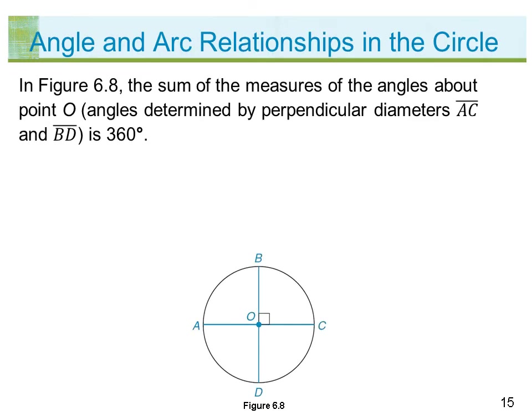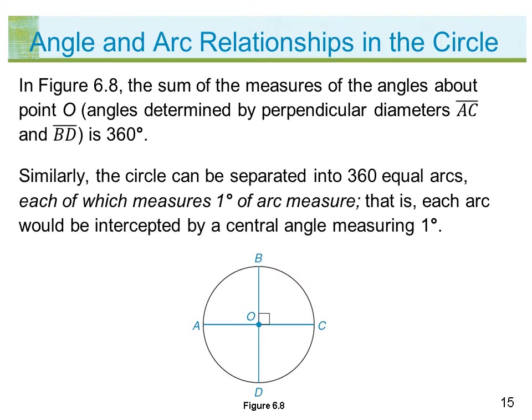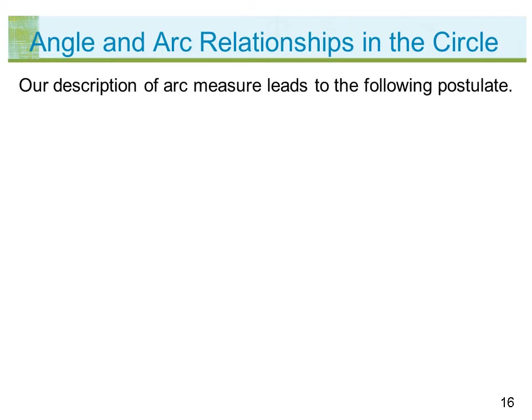In figure 6.8, the sum of the measures of the angles about point O — angles determined by perpendicular diameters segment AC and segment BD — is 360 degrees. Similarly, the circle can be separated into 360 equal arcs, each of which measures one degree of arc measure. That is, each arc would be intercepted by a central angle measuring one degree. Our description of arc measure leads to the following postulate.